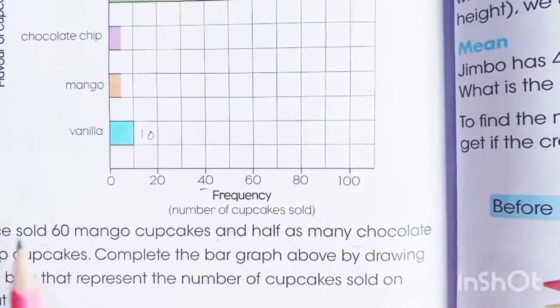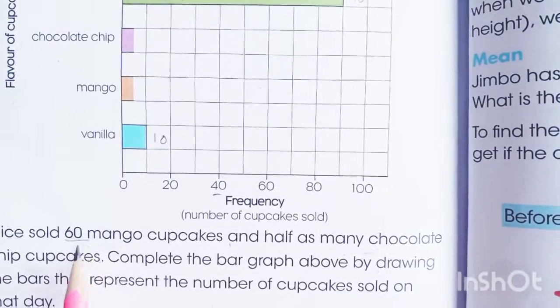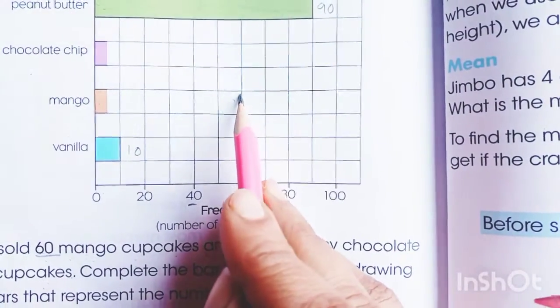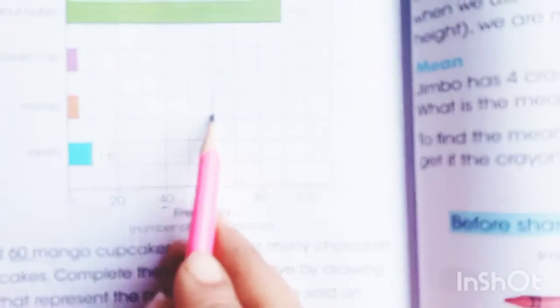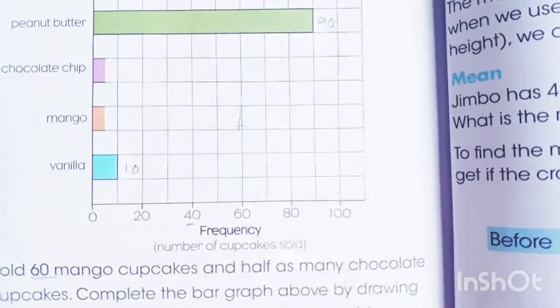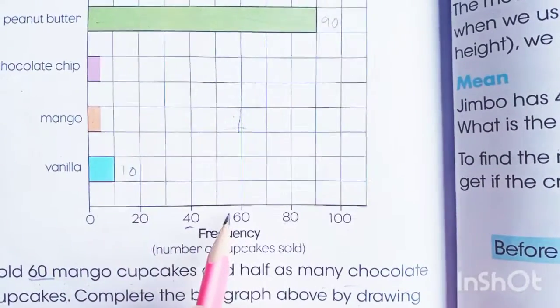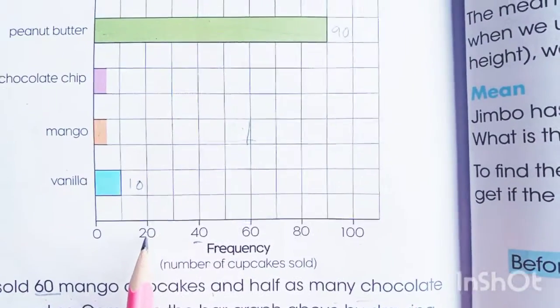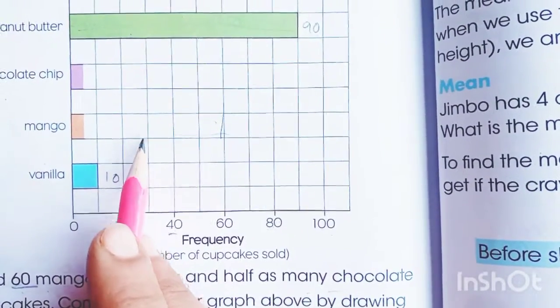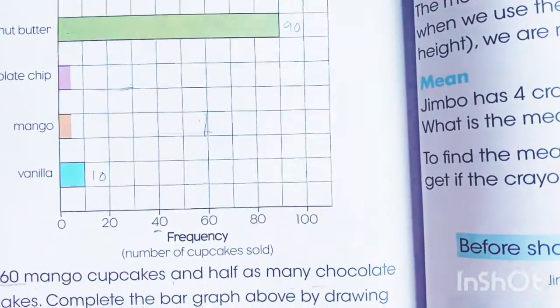Students, we have mango cupcakes — this is the chocolate chip. We have 60 mangoes, so we will shade the bar to the boundary of 60. The chocolate chip cupcakes is half, which is 30. We will draw the chocolate chip bar to the length of 30.